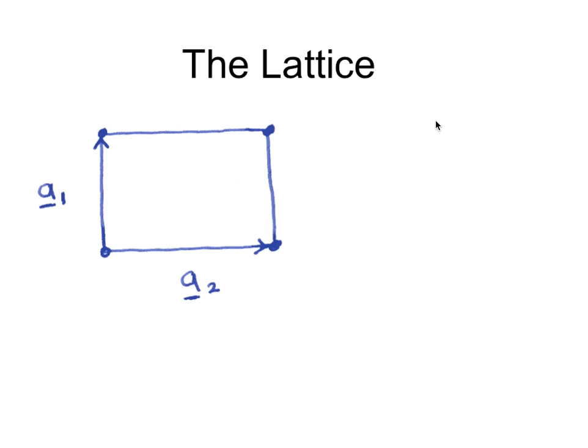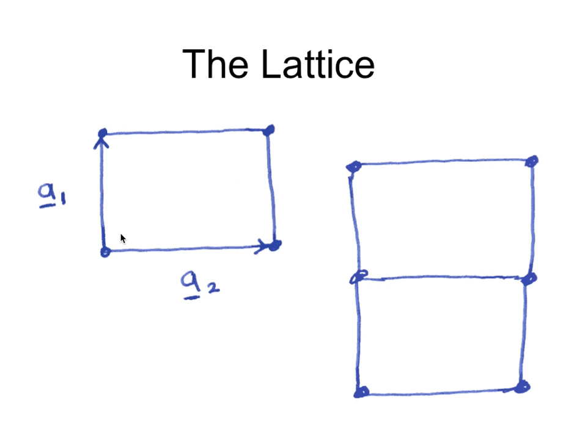So this is our lattice — in this case a rectangular lattice — defined by a unit cell. The two basis vectors which define the unit cell are a1 and a2. The magnitudes of these vectors represent the lattice parameters, and the angle between them is 90 degrees in this case. I can take this cell and stack it together to reproduce the entire pattern in two dimensions.